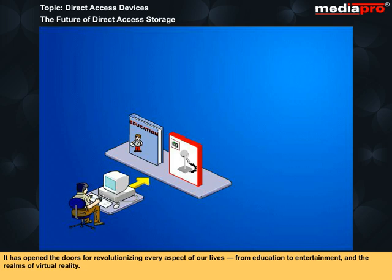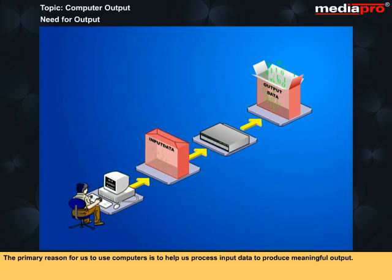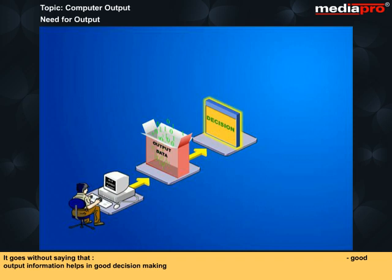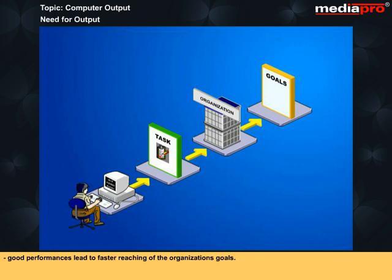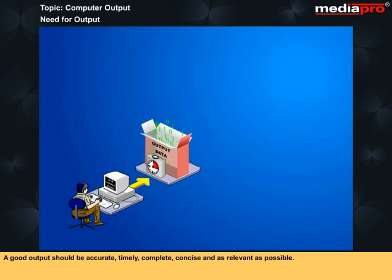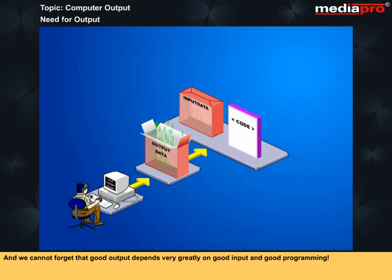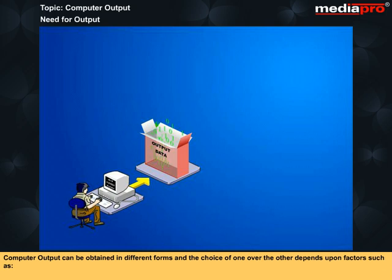The primary reason for us to use computers is to help us process input data to produce meaningful output. It goes without saying that good output information helps in good decision-making, good decisions lead to the effective performance of organizational tasks, and good performances lead to faster reaching of the organization's goals. A good output should be accurate, timely, complete, concise, and as relevant as possible. And we cannot forget that good output depends very greatly on good input and good programming.